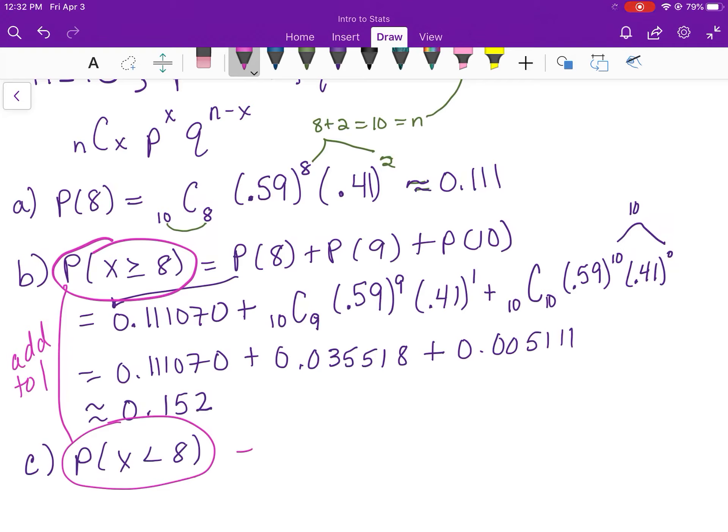So I'm simply going to take 1 and subtract the answer I had before, and that's going to give me the answer to part C. So keep that in mind, and you can use that rather than find the probability of 0, 1, 2, 3, 4, 5, 6, 7, and 8 added together.